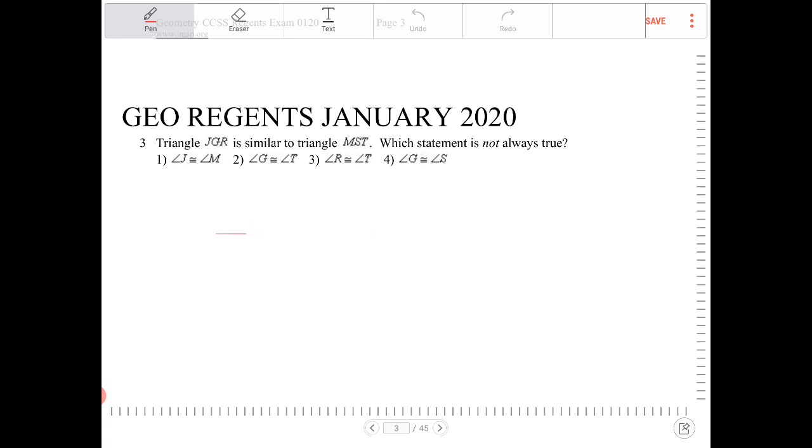You have to understand the notations for describing congruent objects as well as similar objects. So notice that we have triangle JGR is similar to triangle MST.